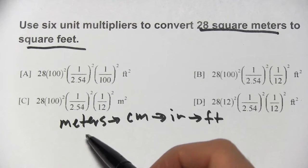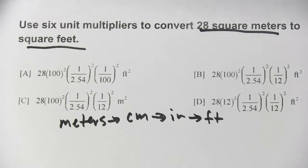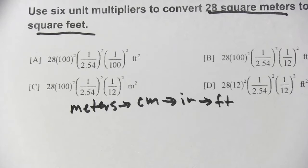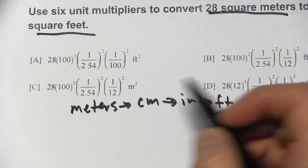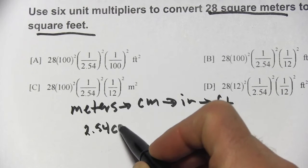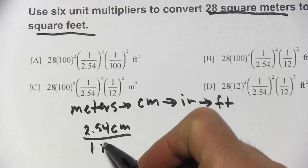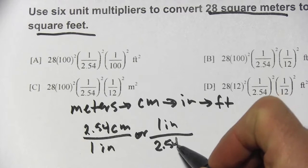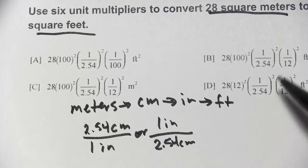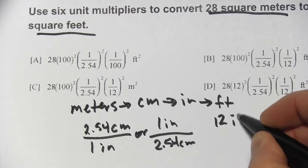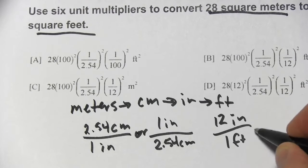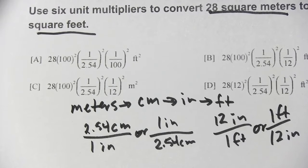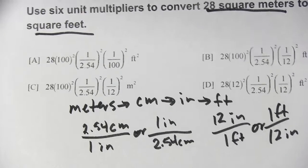So we'll need conversion factors or unit multipliers from meters to centimeters. We have that already. That's up here. And we'll need from centimeters to inches. So there are 2.54 centimeters in 1 inch. Or we could write that as 1 inch per 2.54 centimeters. And then we just need inches to feet. There are 12 inches in 1 foot. Or we could write that as 1 foot on top and 12 inches on the bottom. So we've got all of our unit multipliers here.